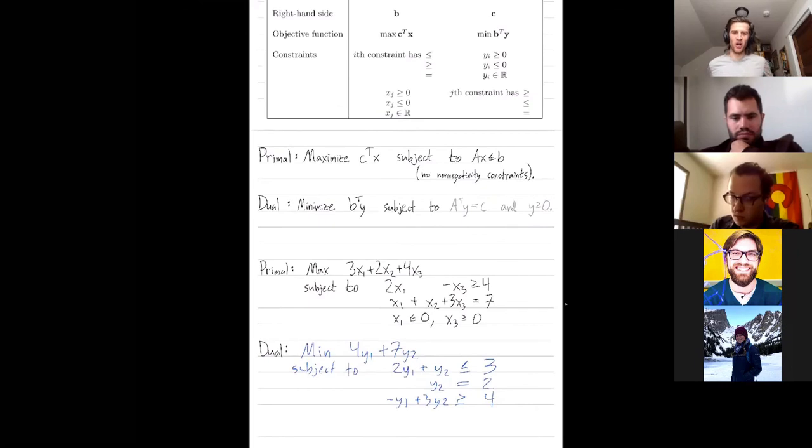And then I just need to tell you, what do I know about y1 and y2? Are they non-negative, non-positive? So to figure out that, we look at the constraints of the primal.